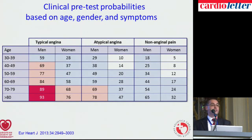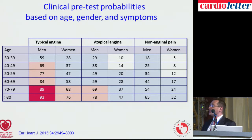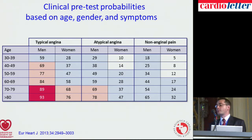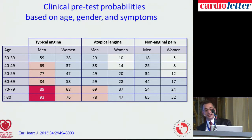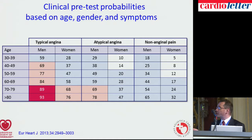You all know the concept of pretest probabilities of disease. The pretest probability of coronary artery disease is easily estimated by age, gender, and symptoms. In the new guidelines, you may recognize that there are no longer just three categories, but more categories.